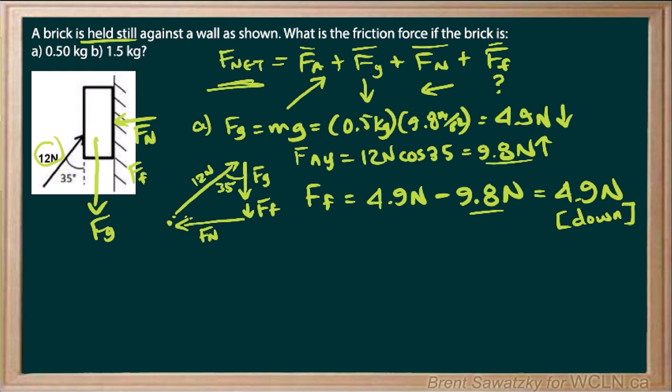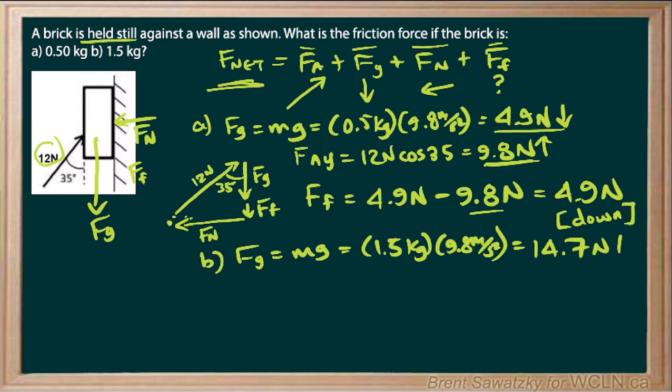Let's move on to part B and see if things are any different. Okay, so in part B, we've already established our F_A_Y, and so our F_G is the one that we're going to have to determine now. Again, mg, in this case, it's 1.5 kilograms, and 9.8 meters per second squared. And in this case, we end up with 14.7 newtons, and of course, it's gravity, it's down.